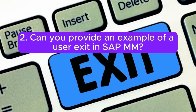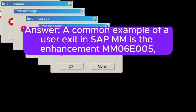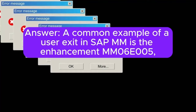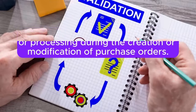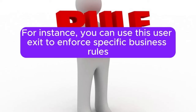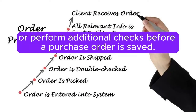Can you provide an example of a user exit in SAP MM? A common example of a user exit in SAP MM is the Enhancement M06E005, which enables additional validation or processing during the creation or modification of purchase orders. For instance, you can use this user exit to enforce specific business rules or perform additional checks before a purchase order is saved.